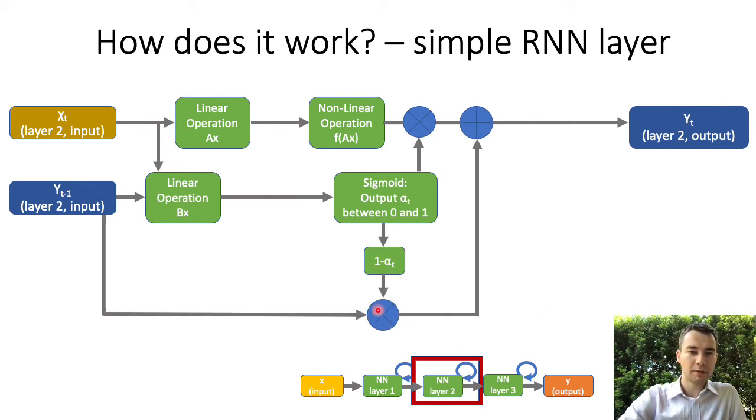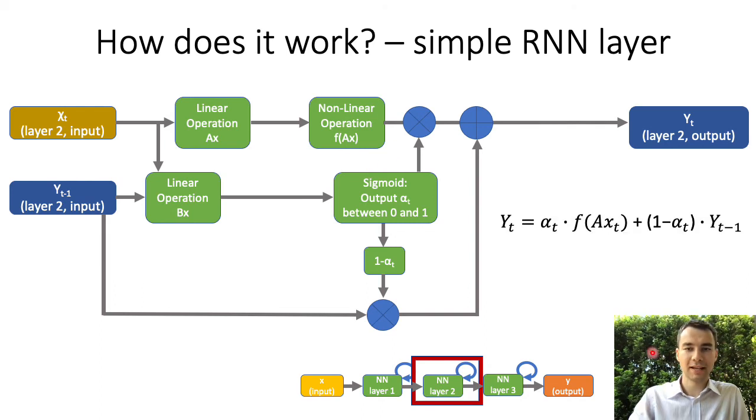In the last step we multiply the previous output with 1-sigmoid output and add it to the modulated output of the primary neural network. You can now think of the whole system as a first order infinite impulse response filter of the output of the primary neural network.